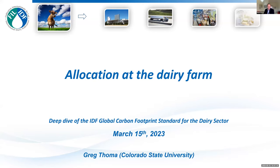Greg is the director of agricultural modeling and LCA with the AG Next program at Colorado State University, focusing on research on assessing and improving animal agriculture sustainability. Greg is going to talk about the feed and farm components of the allocation methodology.